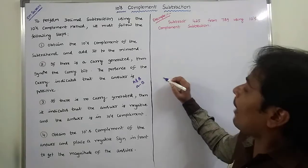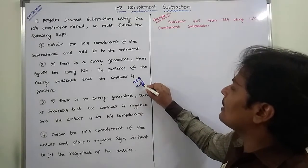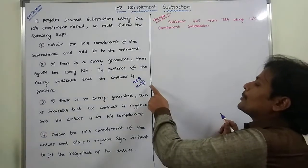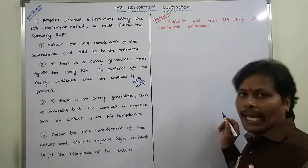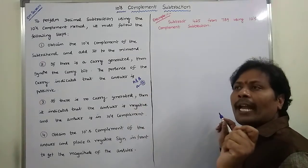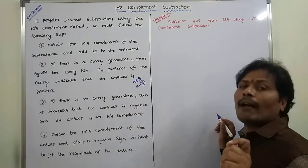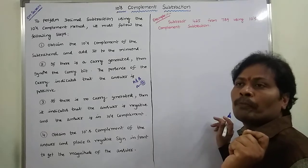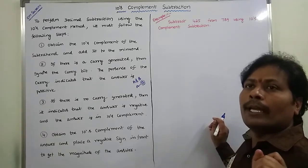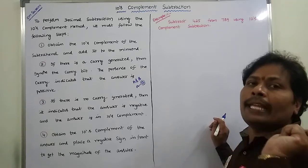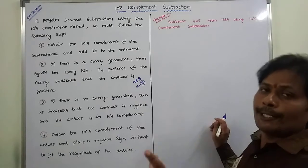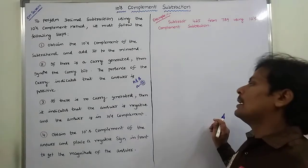The first step is to find out the tense complement of the subtrahend, then add it to the minuend A. If there is any carry generated after performing the addition operation, that carry is discarded. Because of that carry, we can say that the result is positive.